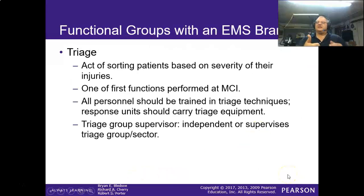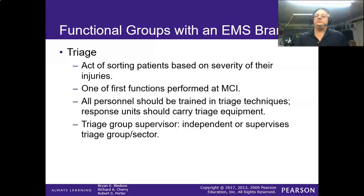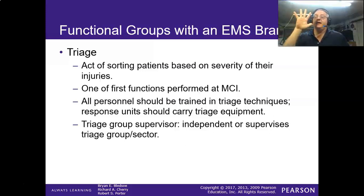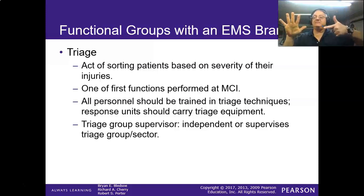After you get a commander in there, to start out with you're probably just going to have command and triage. Then as the incident grows and you get more people there, you can assign a branch manager or an operations section chief to start handling these different things. As the incident grows, your span of control must grow. If the incident commander is having to do triage, treatment, transport, landing zone, the entire operations part, PIO and safety officer — we're getting close to the edge here.